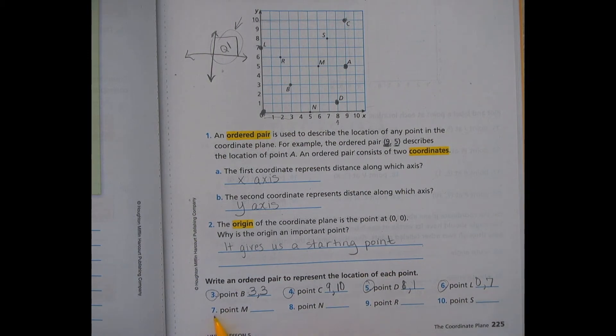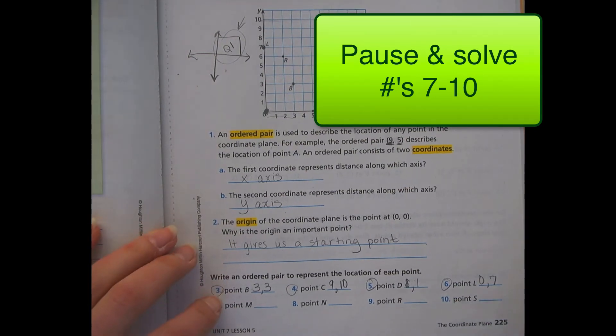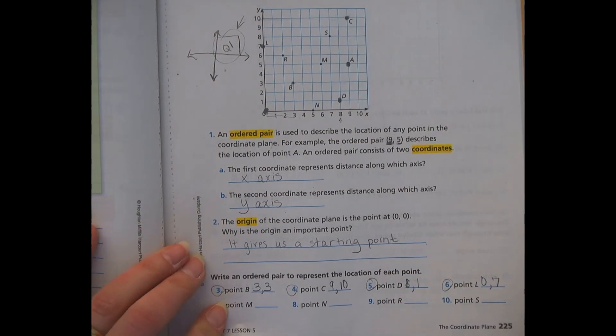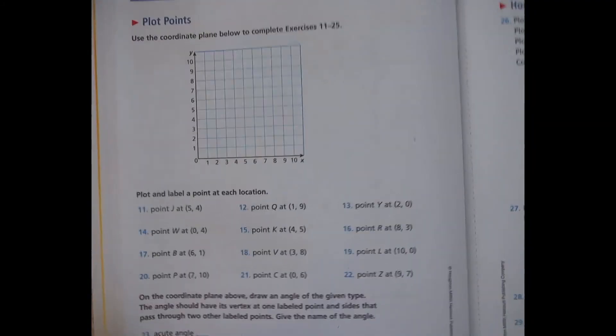So now you need to go through and do seven, eight, nine, and ten on your own. And we will check those tomorrow. And then there's one more little page. So go ahead and flip your paper over once you're done with those. And Mrs. Van Damme will go over the next part.